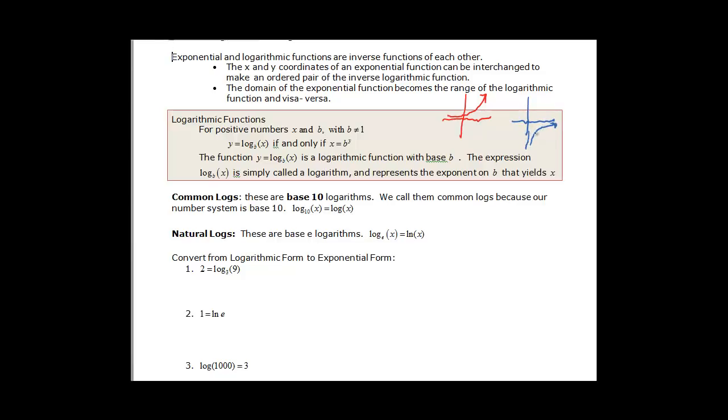It can cross the x-axis but it won't cross the y-axis. So for positive numbers x and b, b is not equal to 1. You have to remember that. Then y is equal to log base b of x if and only if—that's that one to one function—x is equal to b to the y. So the function y equals log base b of x is a logarithmic function with a base of b. And the expression is simply called a logarithm. It represents the exponent on b. That's important.